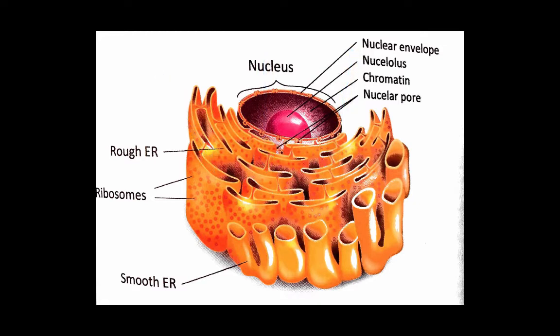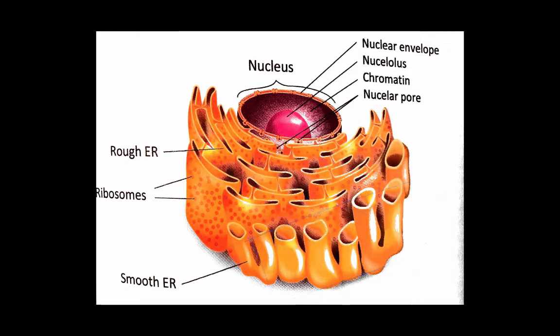The endoplasmic reticulum that lacks ribosomes appears smooth under the microscope and is named such. The smooth ER is the site of lipid production, and cells responsible for producing lipids, steroids, and hormones will have an abundance of smooth endoplasmic reticulum, also known as SER. SER is also the site of detoxification of poisons, such as alcohol, and will be found in abundance in organs such as the liver, which deals with toxins.